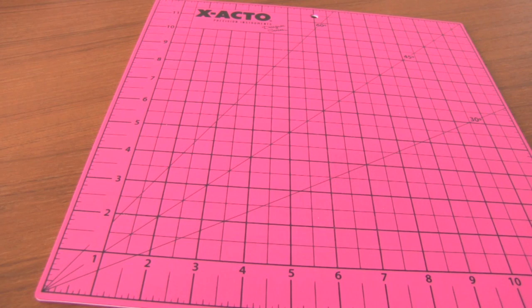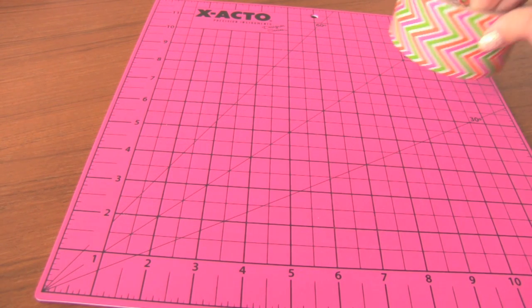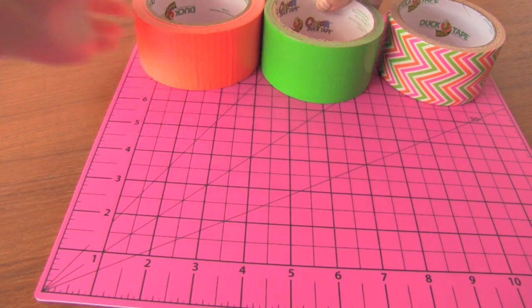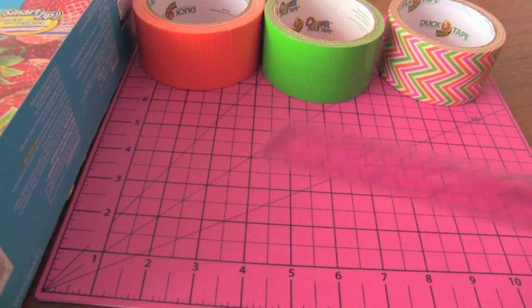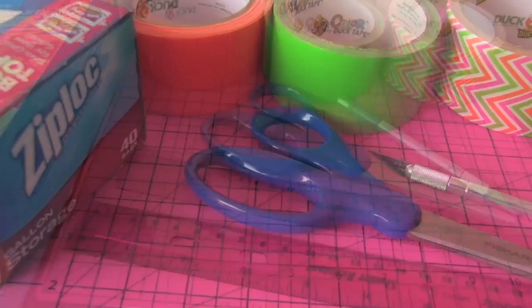let's get to it. For this tutorial I'm going to be using a cutting board that I got from Walmart, a patterned roll of duct tape, two solid colored rolls of duct tape, some ziplock bags, I got 40 in this pack, a ruler, a pair of scissors, and an exacto knife.